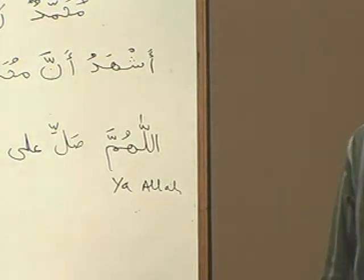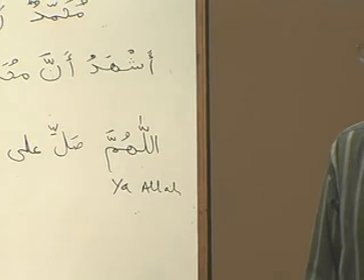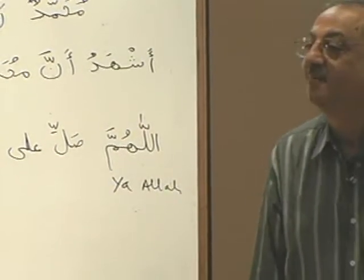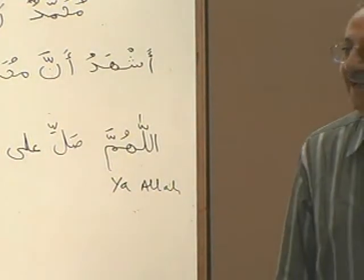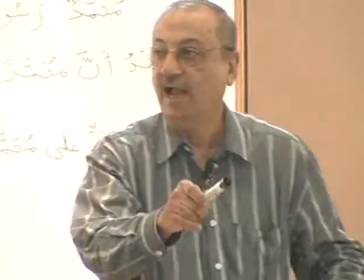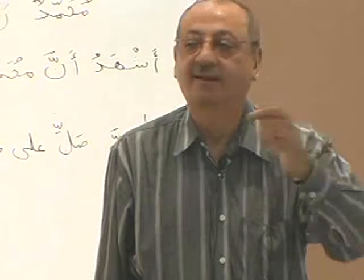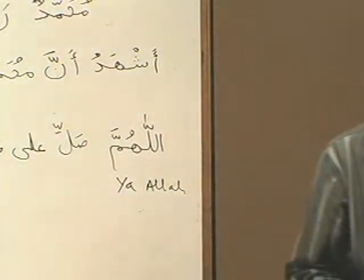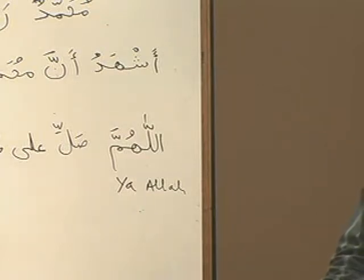So you can say Ma haza — Haza kalam. But if I point to brother Muhammad, I cannot say Ma haza; I will say Man haza. And my answer will be Haza Muhammadum. If I point to this brother I will say Man haza — Haza Hasanun. And for the third gentleman, Man haza — Haza Abdus Samad. So for human beings and anything rational, we use Man.